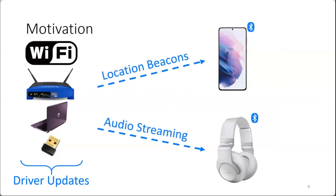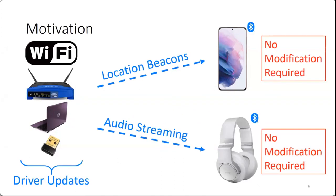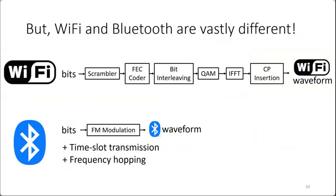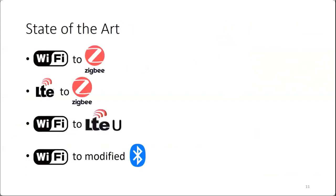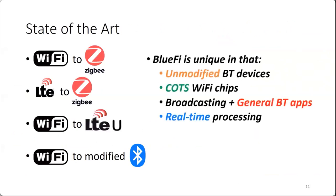BlueFi enables Wi-Fi devices to transmit location beacons or stream Bluetooth audio. Since the transmitted signal looks like a conventional Bluetooth signal, no modification to Bluetooth devices is required. The challenge is that Wi-Fi and Bluetooth signals are vastly different — their transmitter block diagrams have completely different designs. Compared to prior cross-technology communication work focused on ZigBee, Bluetooth lacks ZigBee's error correction and transmits bits four times faster, making it more challenging.